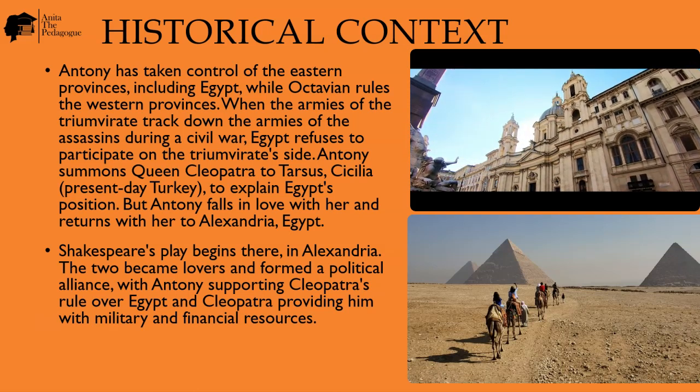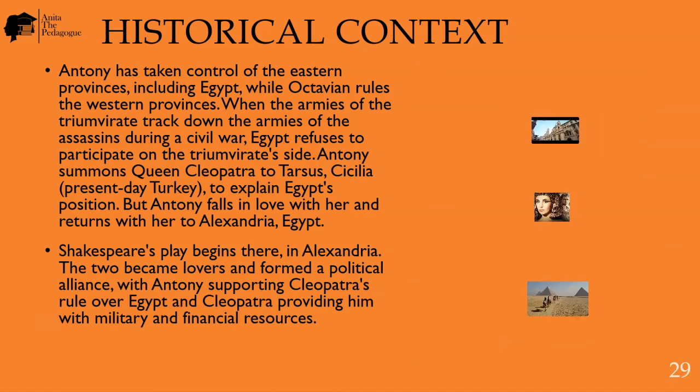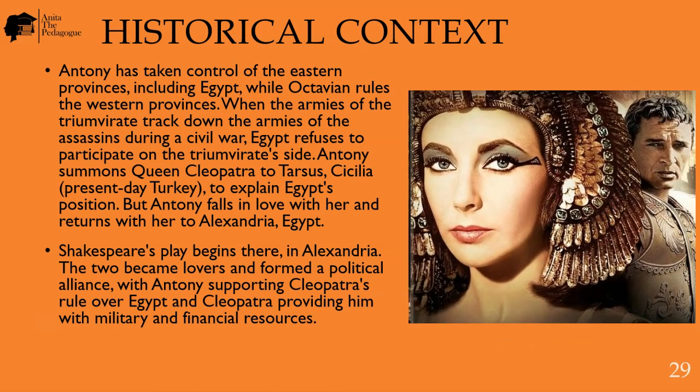When the armies of the Triumvirate tracked down the armies of the assassins during the civil war, Egypt refuses to participate on the Triumvirate's side. Antony summons Cleopatra to Tarsus in Cilicia — present-day Turkey — to explain Egypt's position, but Antony falls in love with her and returns with her to Alexandria, Egypt.